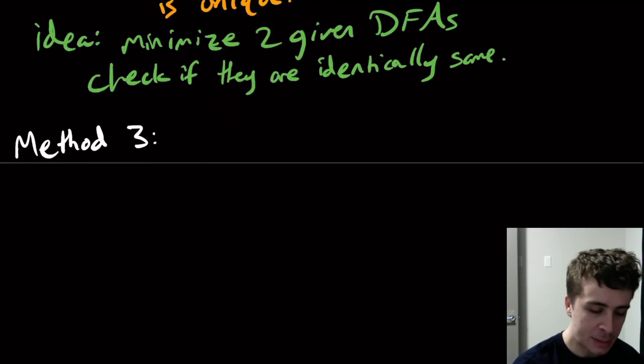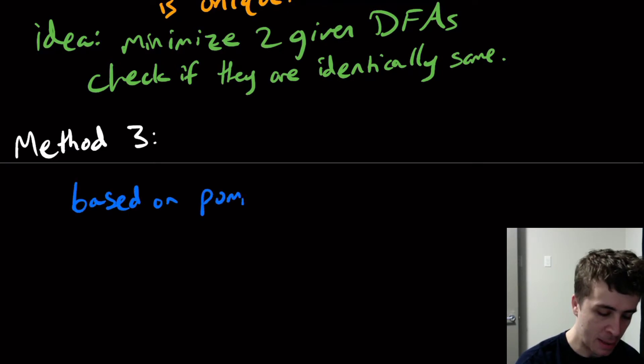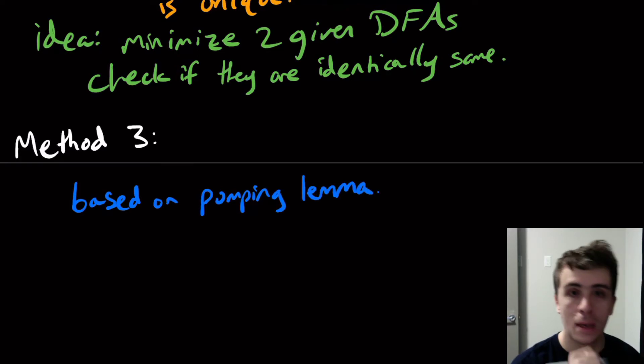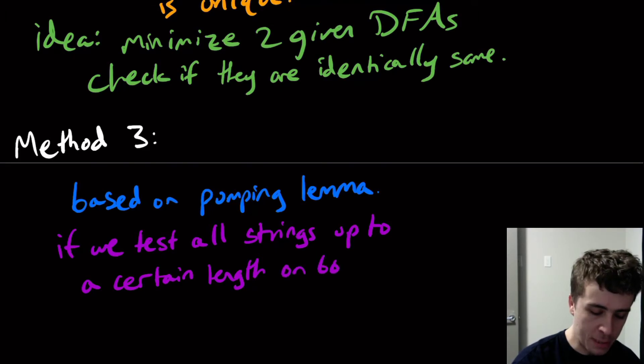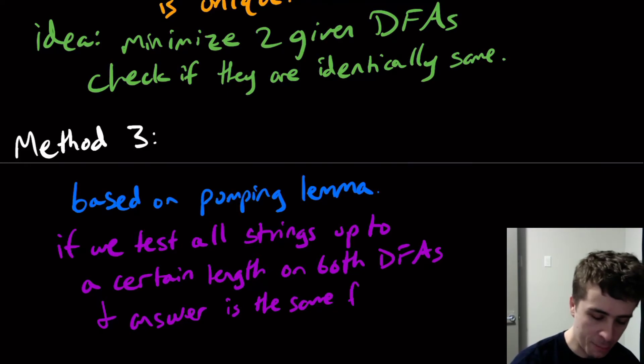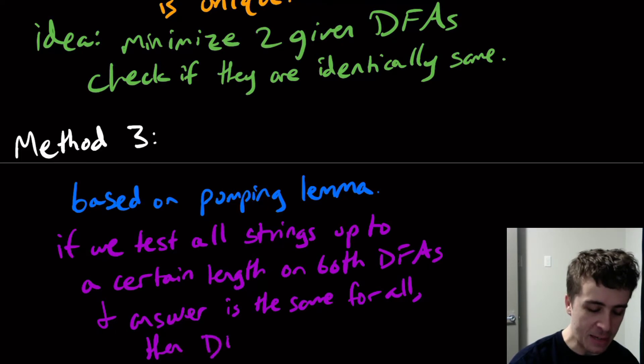The third method is to utilize a different fact which is based on the pumping lemma. Here's the idea: if we test all strings up to a certain length on both DFAs, and the answer is the same for all of them, same for all, then the DFAs are the same or have equivalent language.